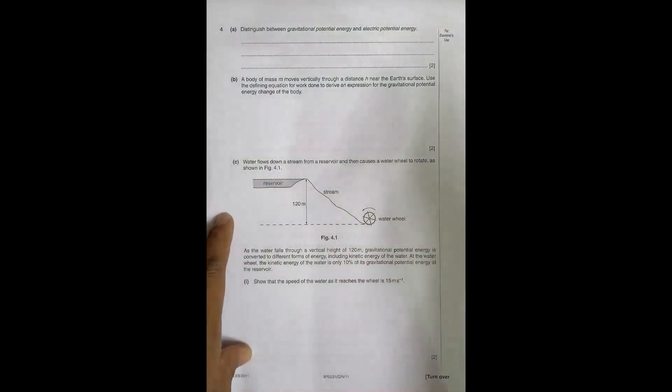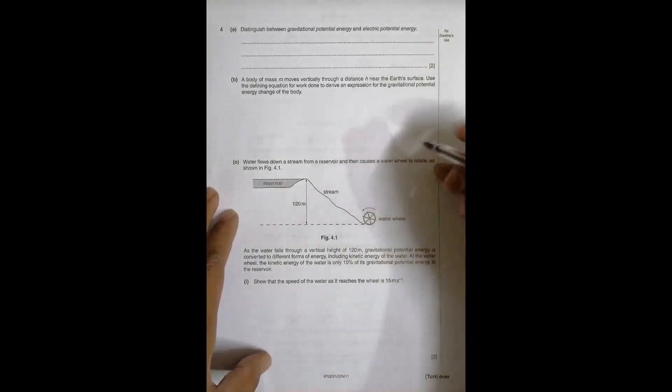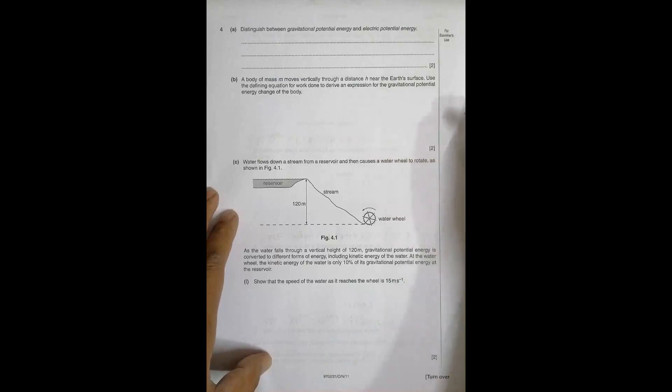So the first question says distinguish between gravitational potential energy and electric potential energy. So both of them are potential energies. One of them is in the gravitational field and another is in the electric field. So the first one should be the energy stored when mass is moved inside the gravitational field and the second should be the energy stored in a charged body when it moves in an electric field.